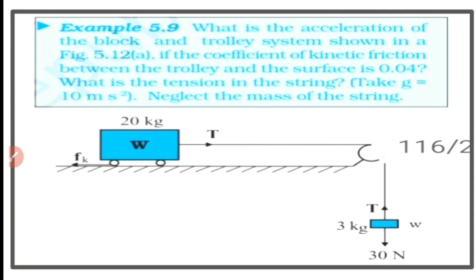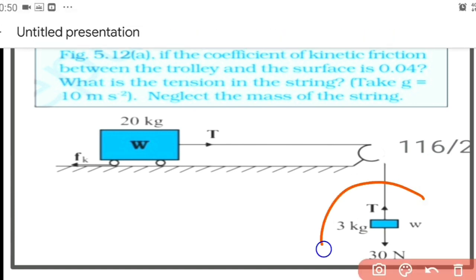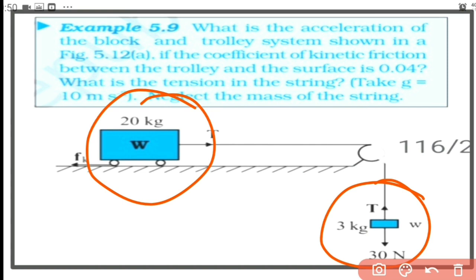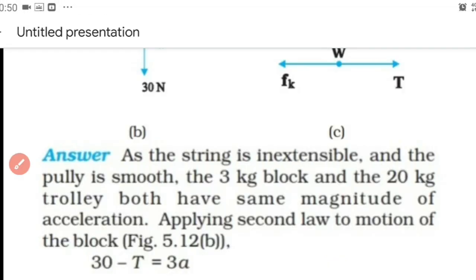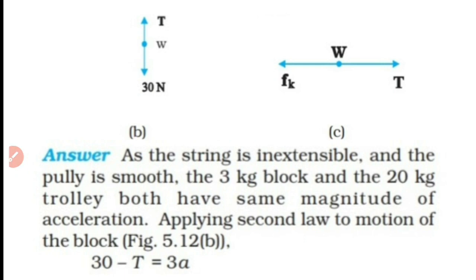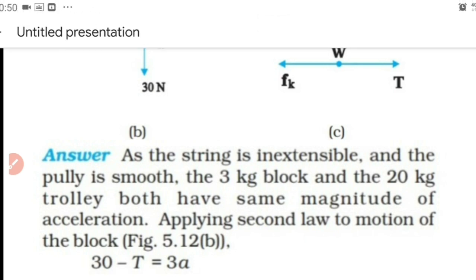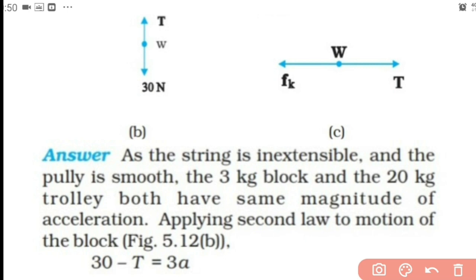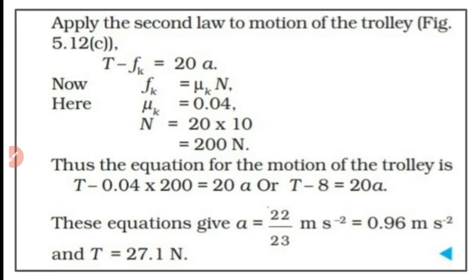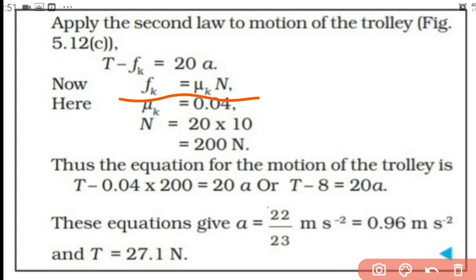Note that the two masses are different: the hanging mass is 3 kilogram and the trolley is 20 kilogram. Looking at the free body diagrams: for the hanging object, 30 minus T equals 3a (first equation); for the trolley, T minus f_k equals 20a. Now f_k equals μ_k times N, where μ_k is 0.04 and N equals 20 times 10 equals 200 Newton.